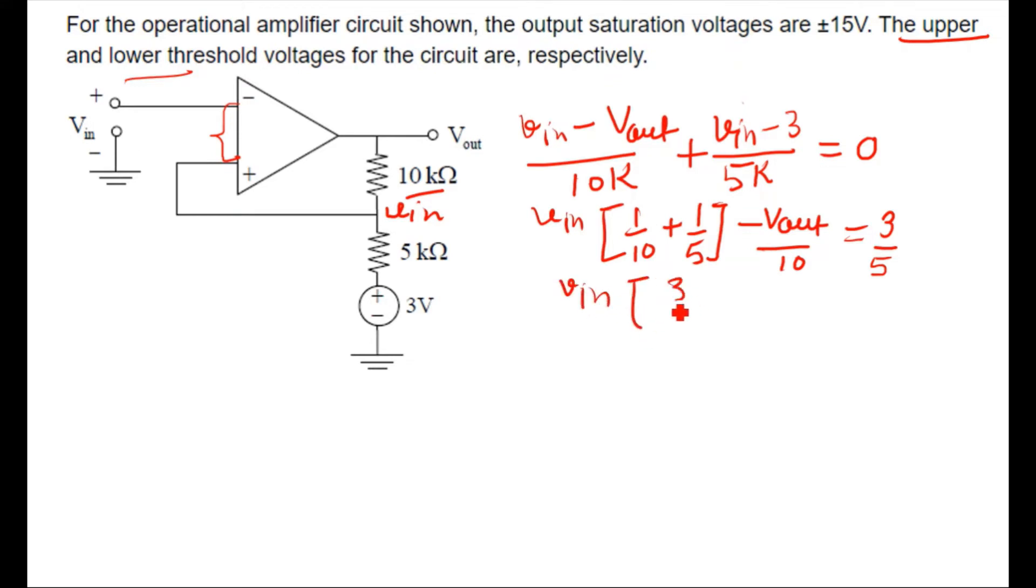Now you will solve it. So V_in, it will become 3 by 5 minus V_out as it is, V_out divided by 10, and here it will remain 3 by 5. So if you want to solve, here it will become 3 by 10.